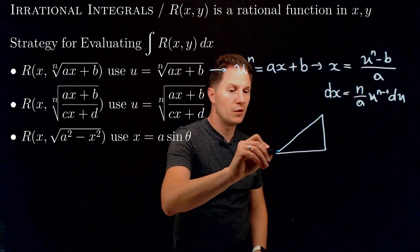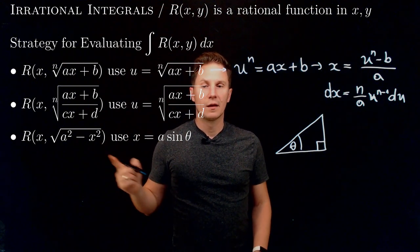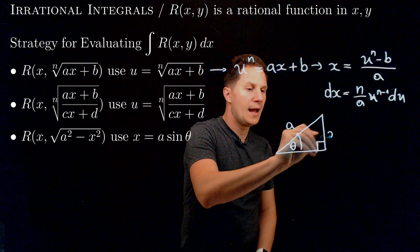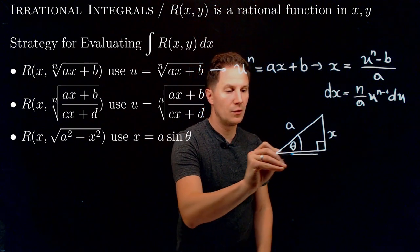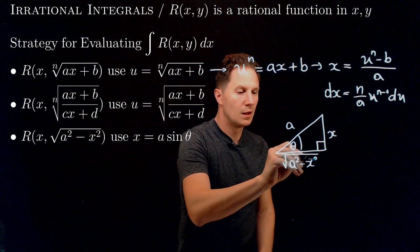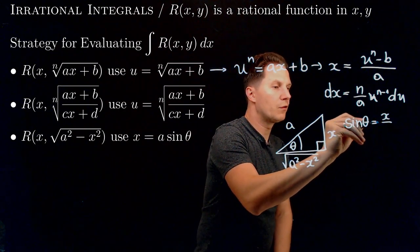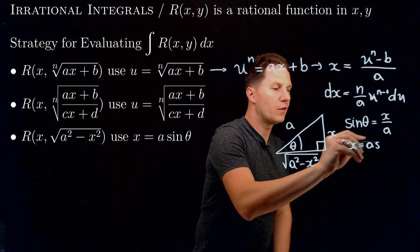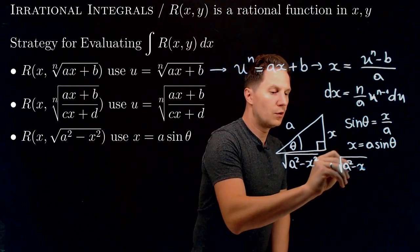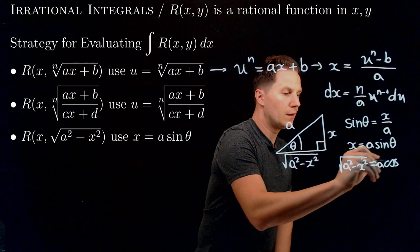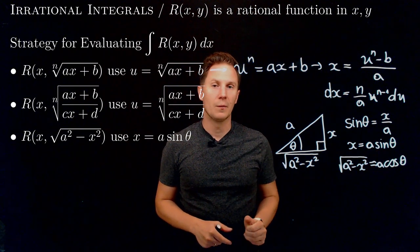We consider a right triangle with one acute angle θ. The form of the square-rooted expression suggests the hypotenuse has length a and one leg has length x. That makes the other leg √(a² − x²). From this, sin(θ) = x/a, so x = a·sin(θ), and the other leg equals a·cos(θ). Therefore the square root expression is turned into a·cos(θ), converting the irrational integral into a trigonometric one.